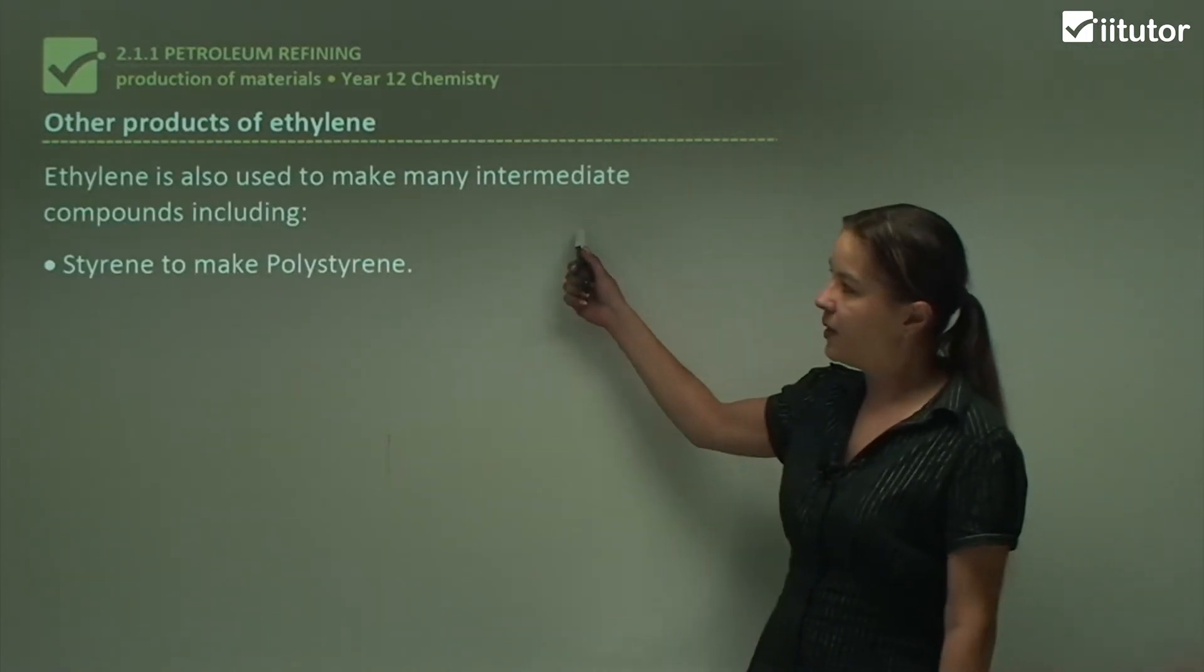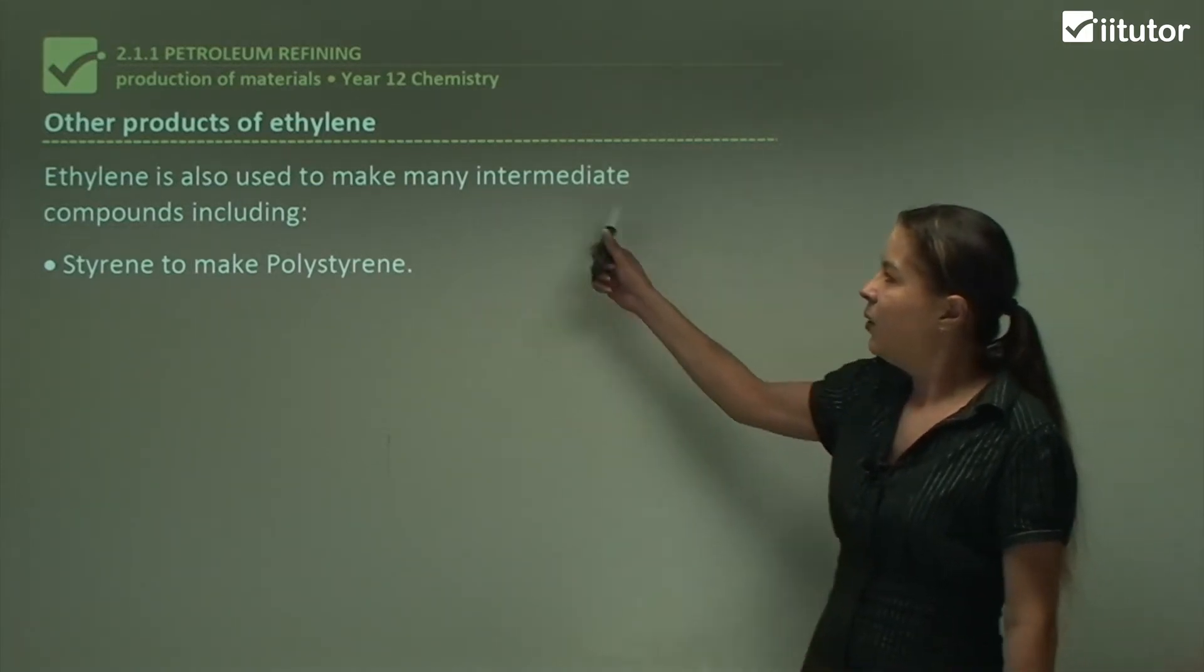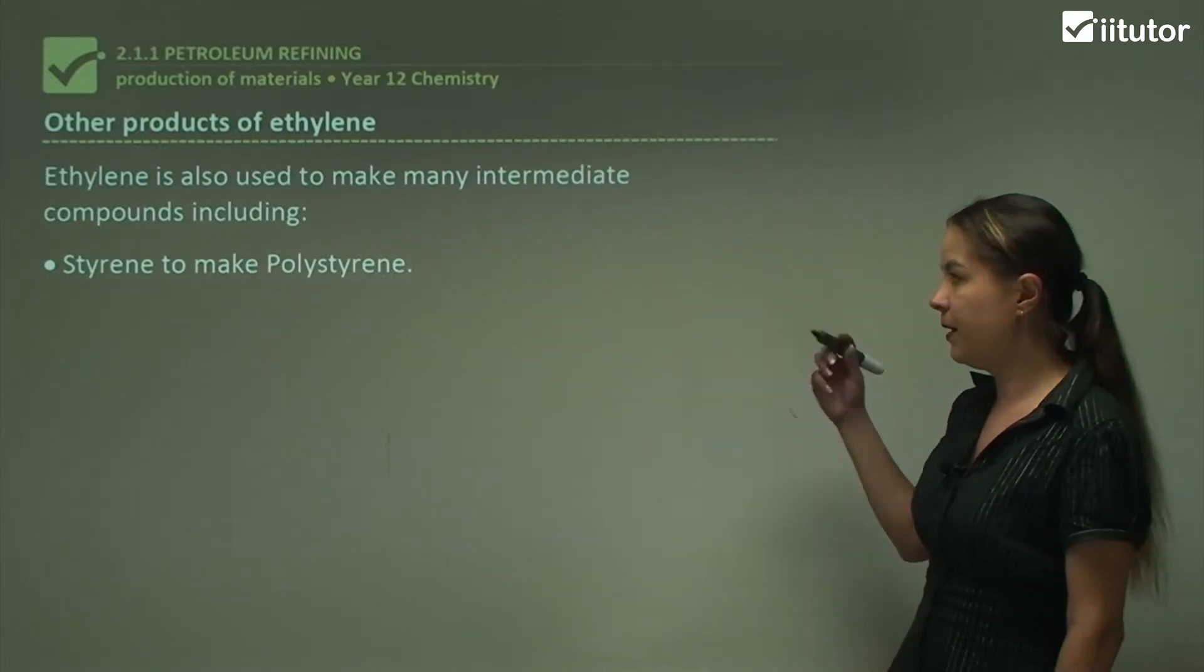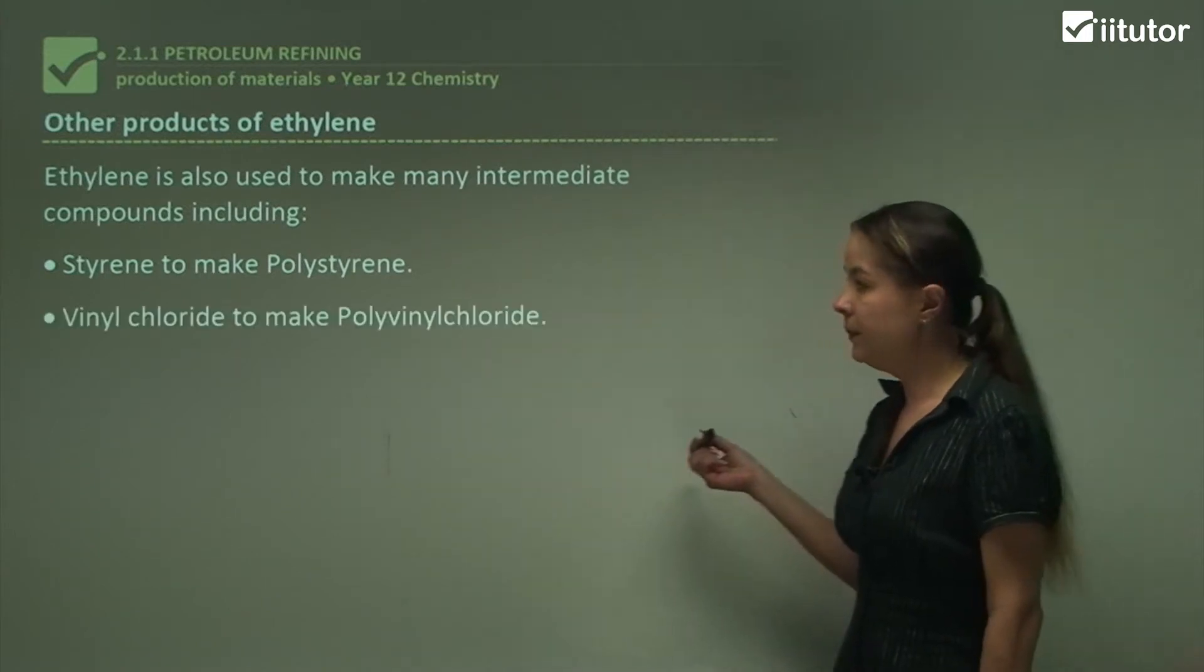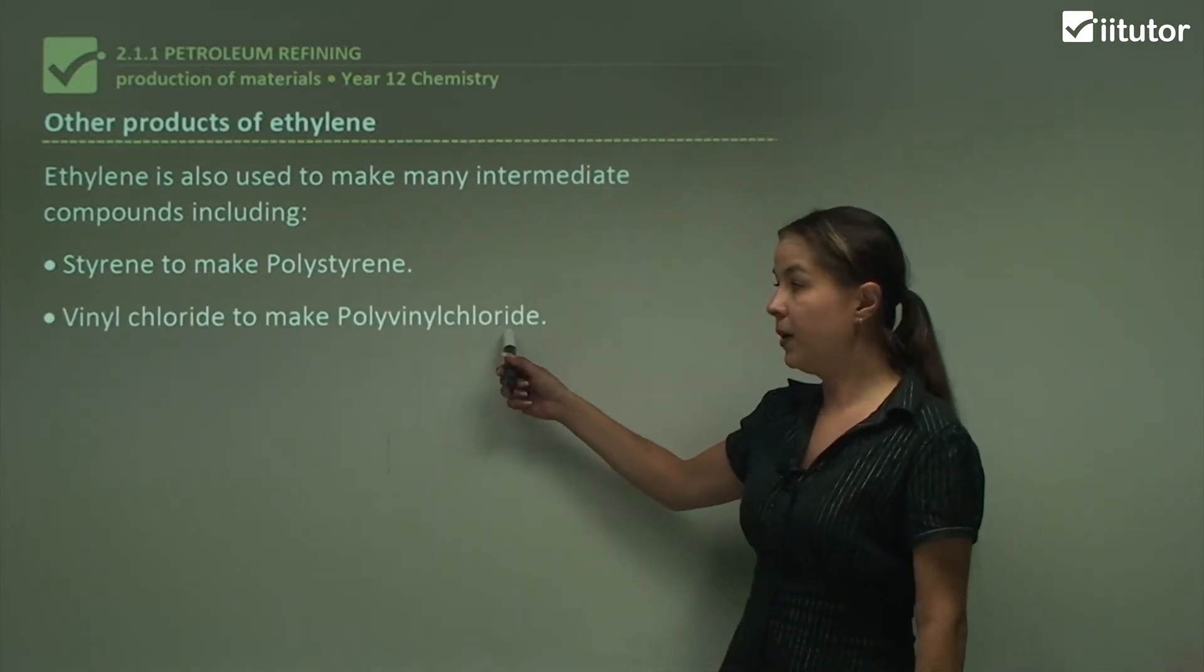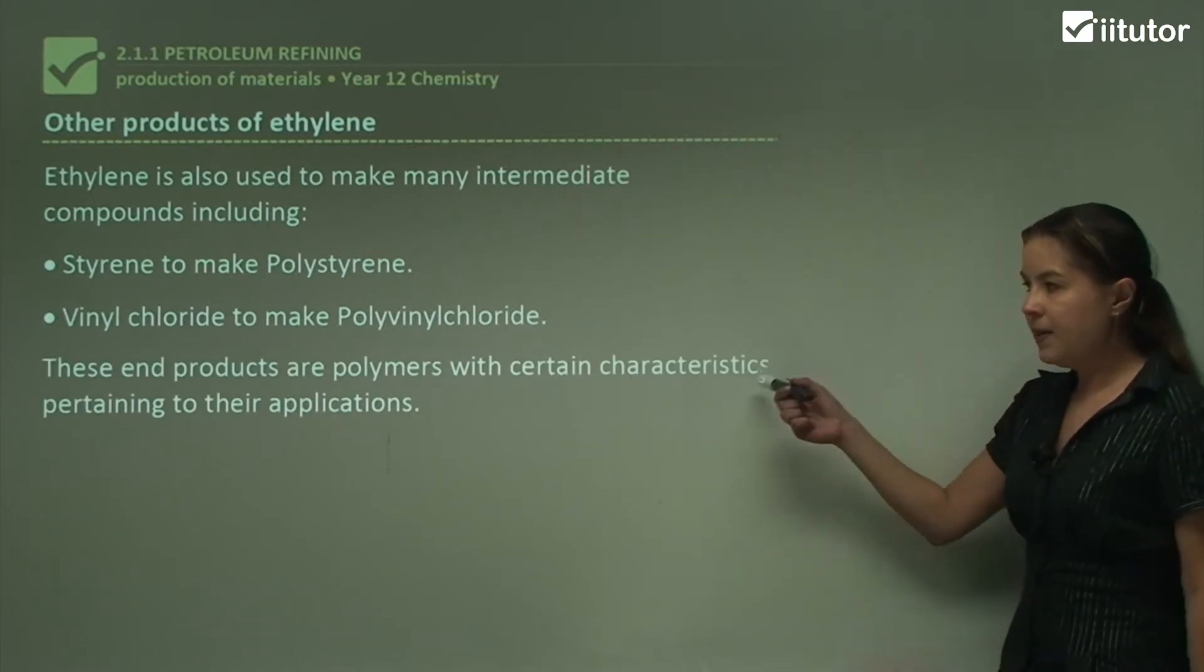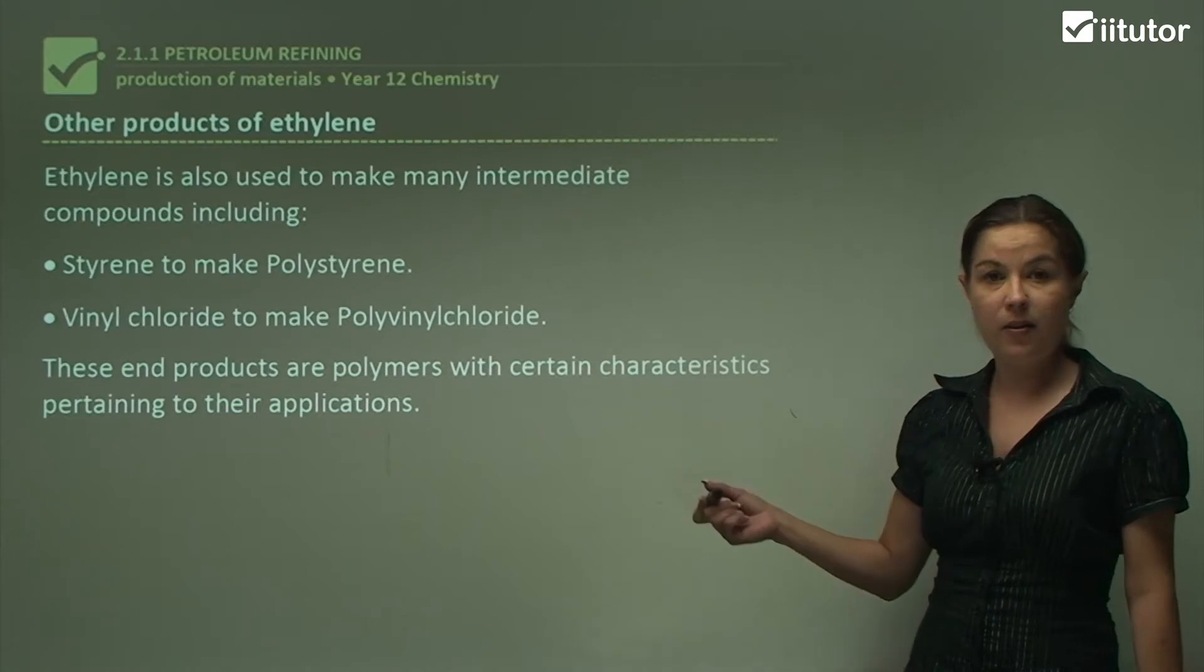Now other products of ethylene, there are hundreds and thousands of them, but here's just a few. Also used to make intermediate compounds, which we saw earlier with our addition reactions, such as styrene to make polystyrene, vinyl chloride to make polyvinyl chloride or PVC. And these end products are polymers with certain characteristics pertaining to their applications.